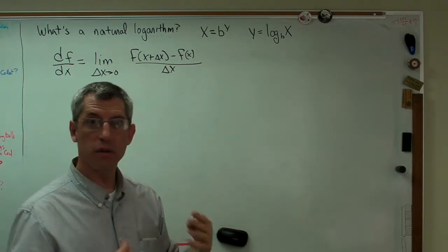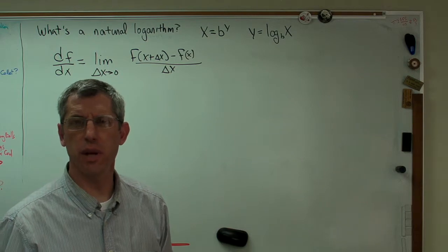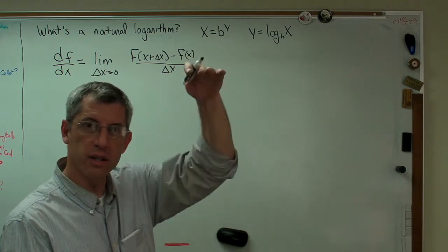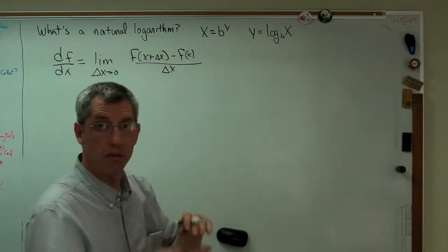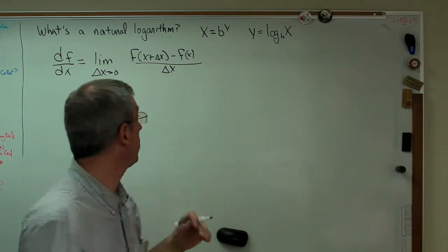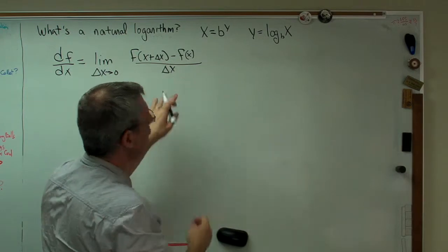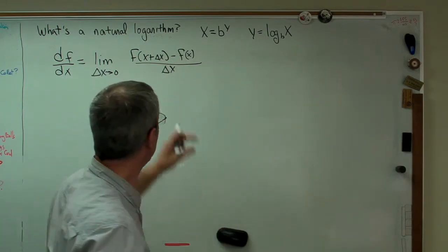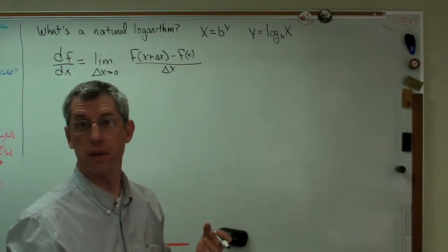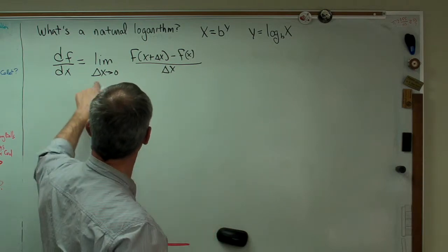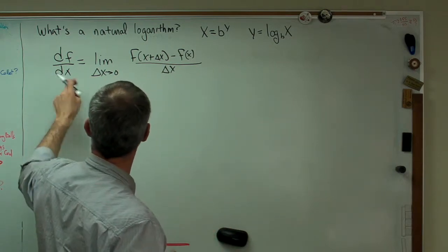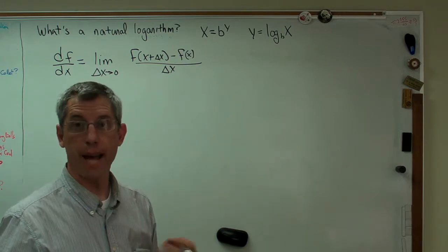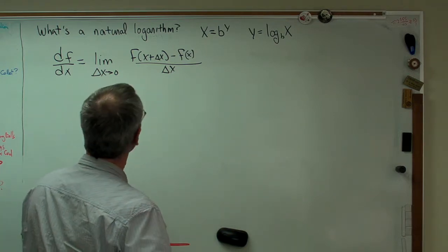Remember, rise over run equals slope. That's how they always explain it to you in American schools. Rise is the vertical distance. Run is the horizontal distance. So that's the change in vertical distance on a plot between two points. And that's the horizontal distance between those two points. That's just a slope. It's between two points. And if those two points get really close together, this turns out to be the slope at a point. That's a derivative.